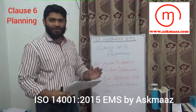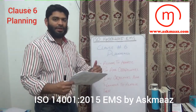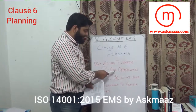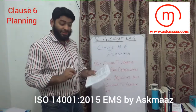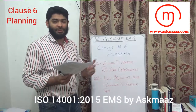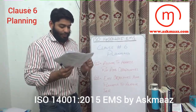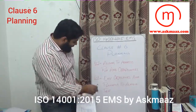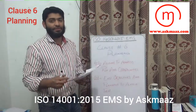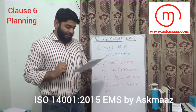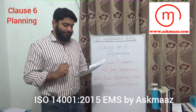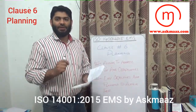Clause No. 6 is Planning. It is further divided into sub-clauses: 6.1 Actions to Address Risks and Opportunities, with sub-clauses 6.1.1 General, 6.1.2 Environmental Aspects, 6.1.3 Compliance Obligations, 6.1.4 Planning Action. And 6.2 Environmental Objectives and Planning to Achieve Them, with 6.2.1 Environmental Objectives and 6.2.2 Planning Actions to Achieve Environmental Objectives. Now we will start with each clause.